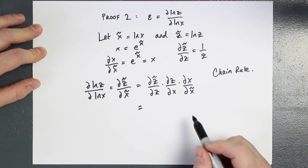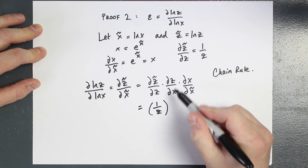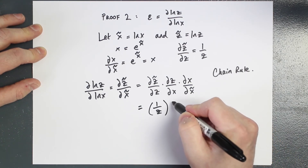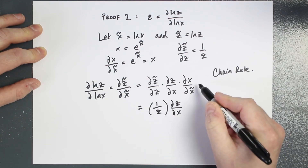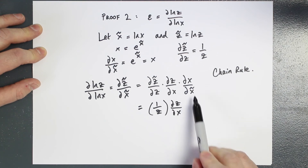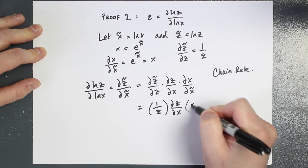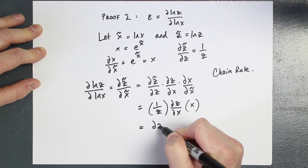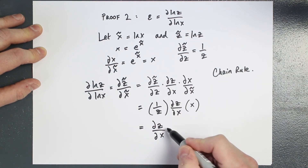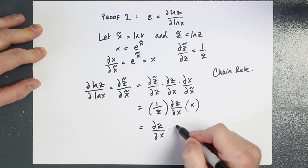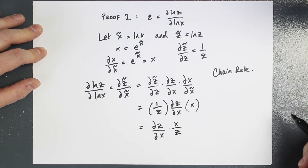We've already established that the first term is 1 over z. We leave the partial derivative of z with respect to x alone. And the partial derivative of x with respect to x-tilde is e to the x-tilde, which equals x. So cleaning up, the derivative of log z with respect to log x equals (∂z/∂x) times x divided by z — which is precisely the point elasticity of z with respect to x.